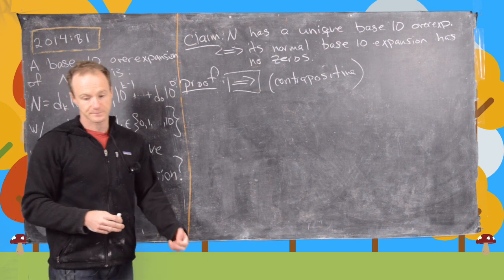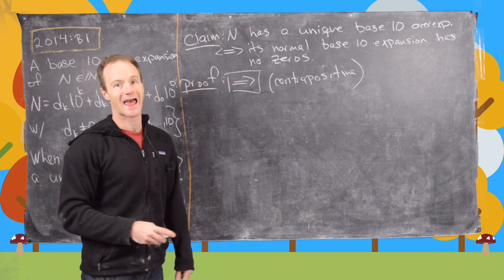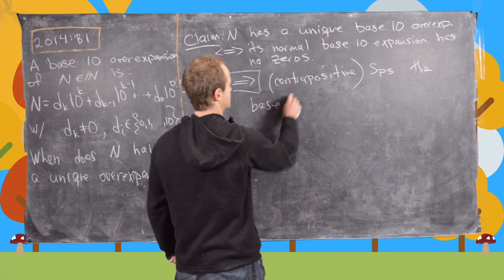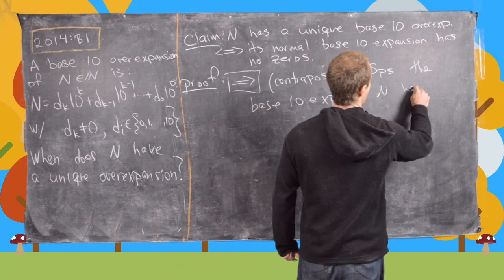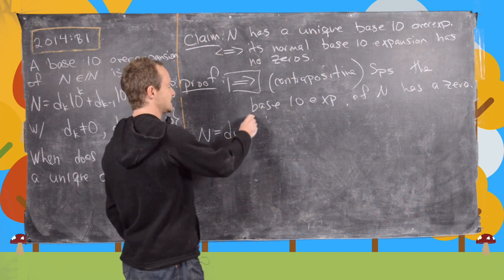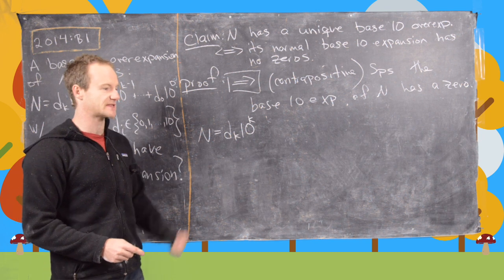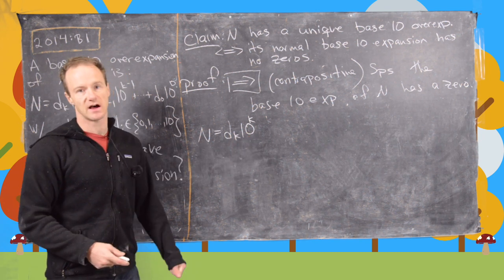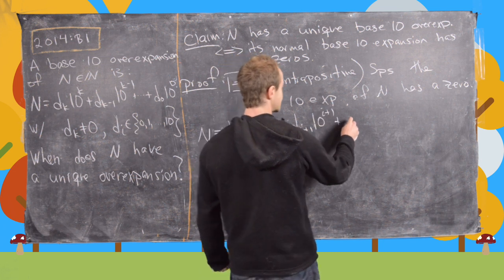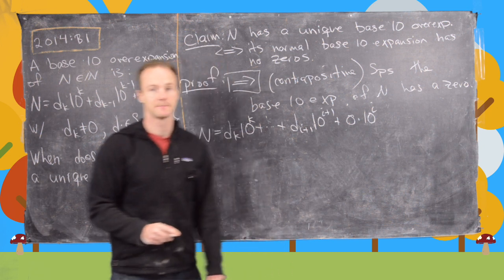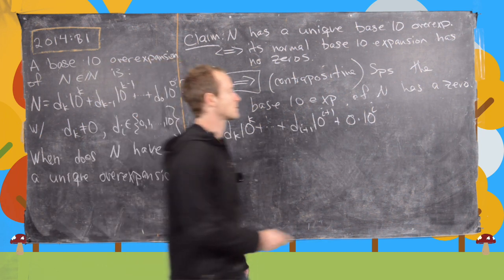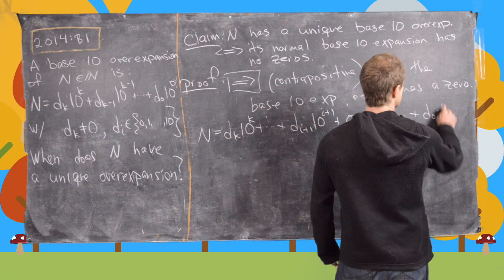For the contrapositive, suppose the base 10 expansion of n has a 0. We write n as d_k times 10 to the k — where d_k is not equal to 0, the highest place value — all the way down to d_{i+1} times 10 to the i+1, then 0 times 10 to the i (that's our assumed zero digit), and then continuing down to d_0 times 10 to the 0.